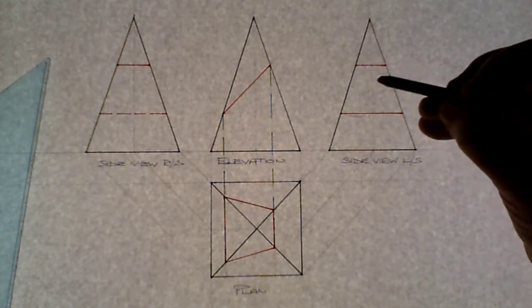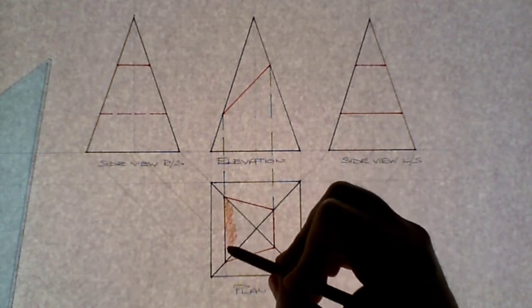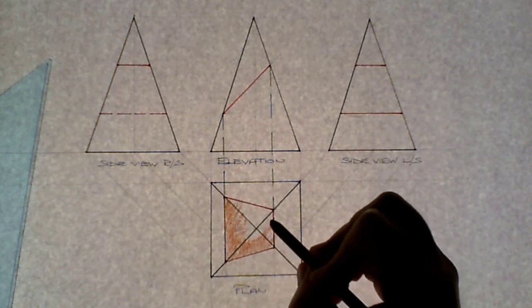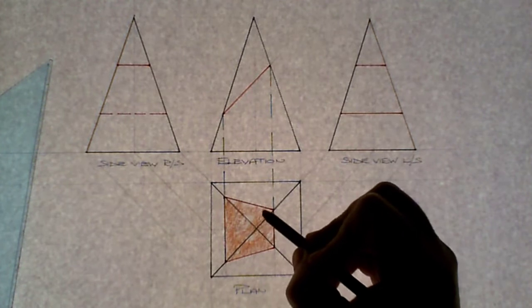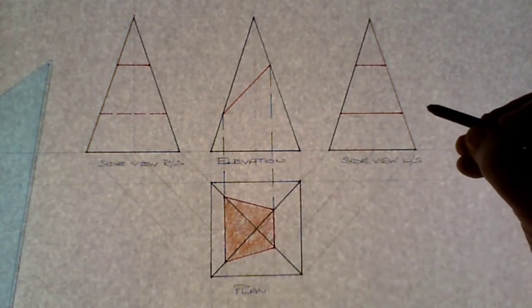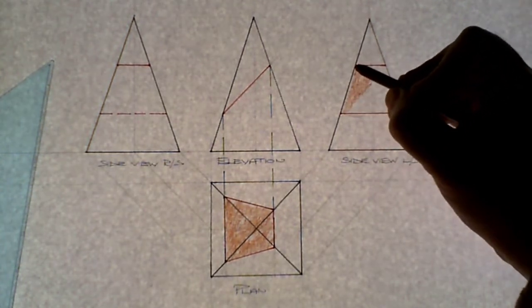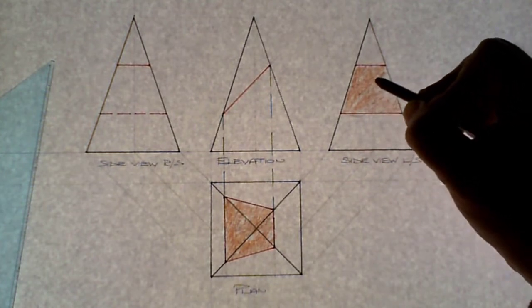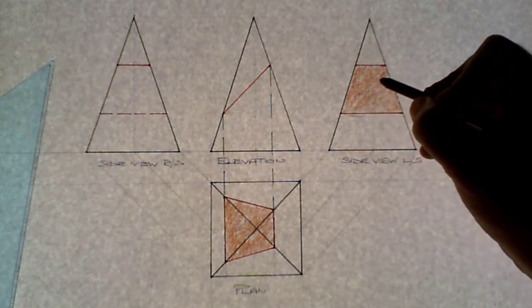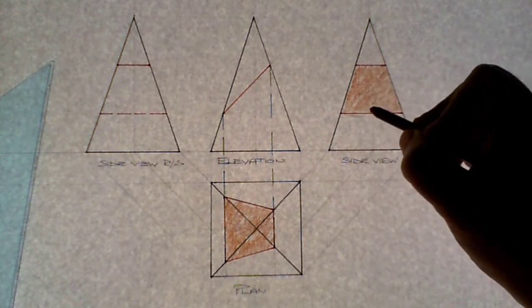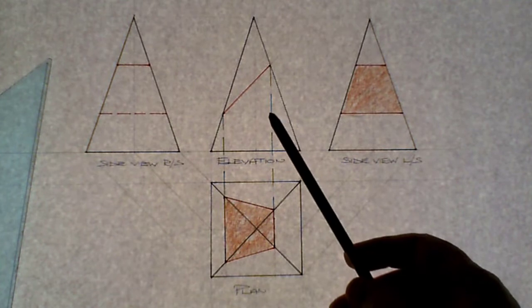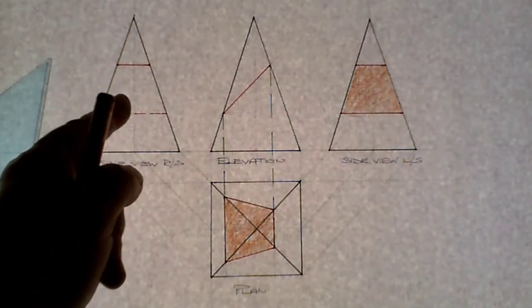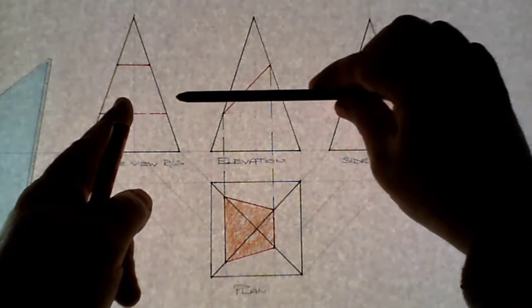Shade in that surface area to show what you can see of the cut. On the plan, shade in the cut surface using a brown colouring pencil. Shade in the side view as well, because that's the cut surface you see on that side view.